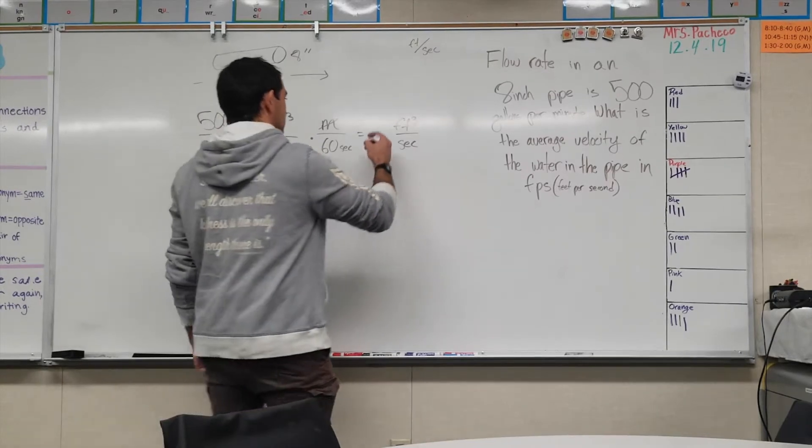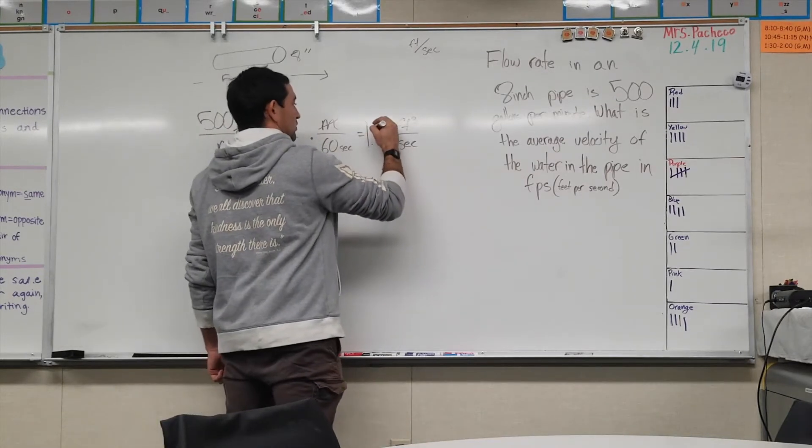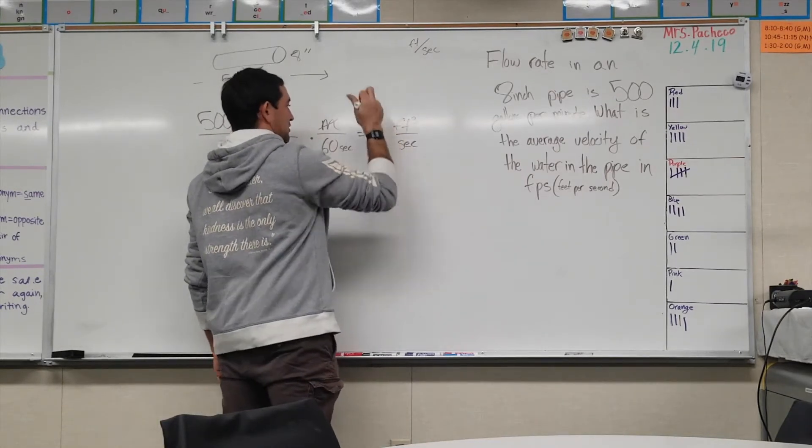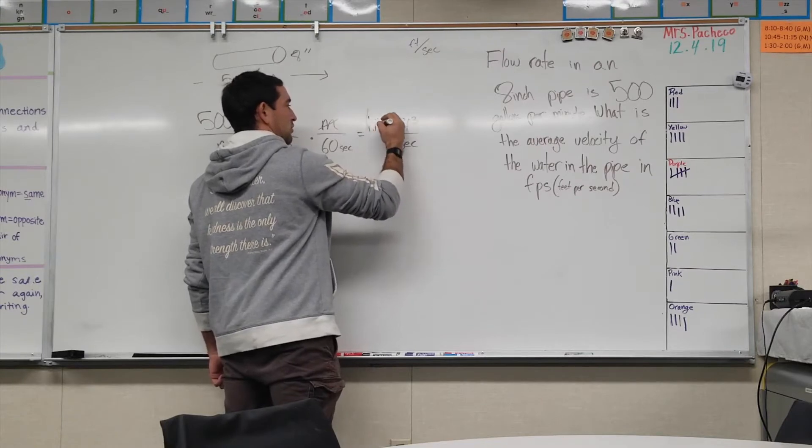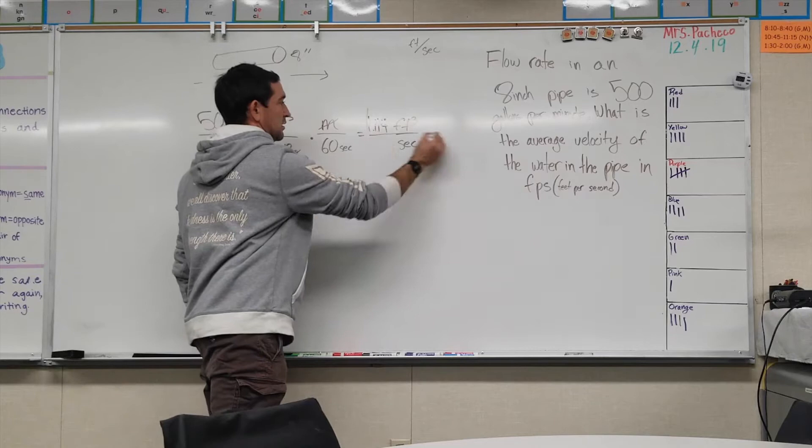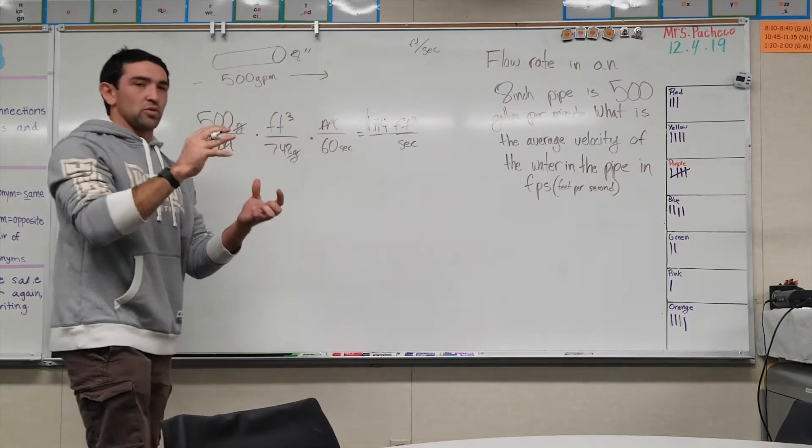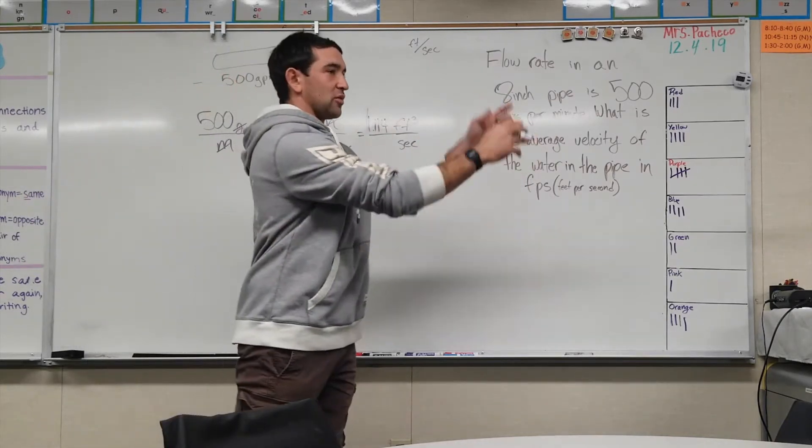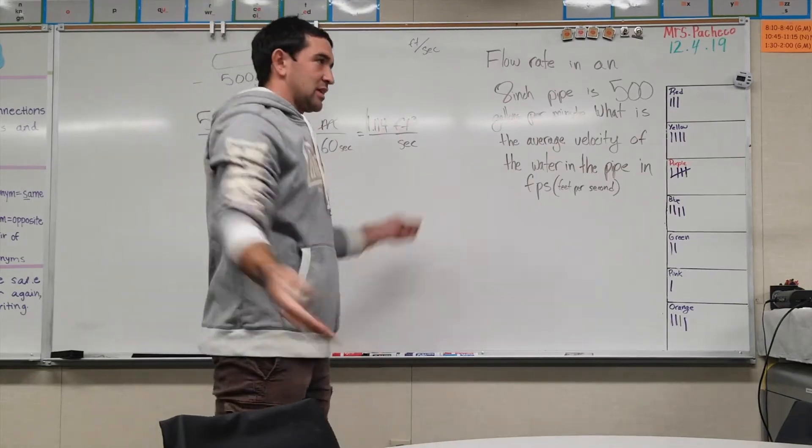That number is 1.114 cubic foot per second. So every second there's 1.114 cubic feet of water going through there in some type of size we don't know.